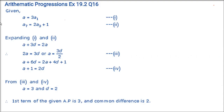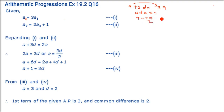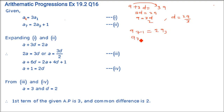The fourth term of an AP is 3 times the first term. So the fourth term a + 3d equals thrice the first term a. This gives 3d equals 2a, so you can write a as 3d/2 or d as 2a/3. Then the seventh term exceeds twice the third term by 1, so a7 equals 2·a3 plus 1.